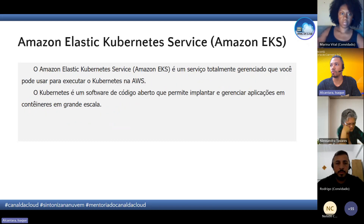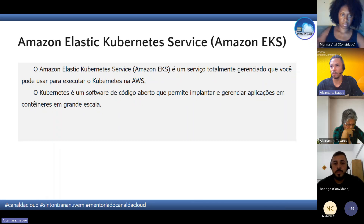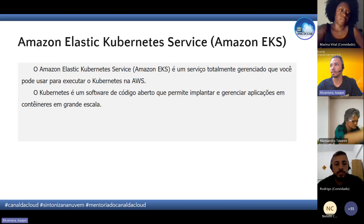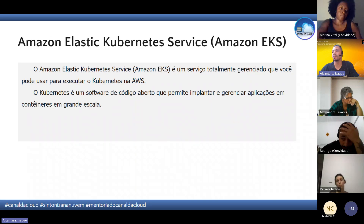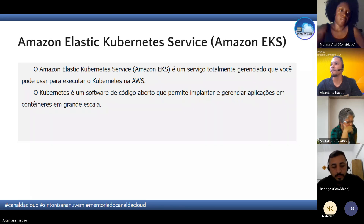Depois temos o EKS — Elastic Kubernetes Service. O propósito é parecido com o ECS, porém ele é voltado para executar Kubernetes na AWS. O Kubernetes é um software de código aberto que permite fazer a implantação e o gerenciamento de aplicações em containers em grande escala. Se cair uma questão na prova: qual serviço da AWS eu uso para mexer com container Kubernetes? É o EKS, Amazon EKS.